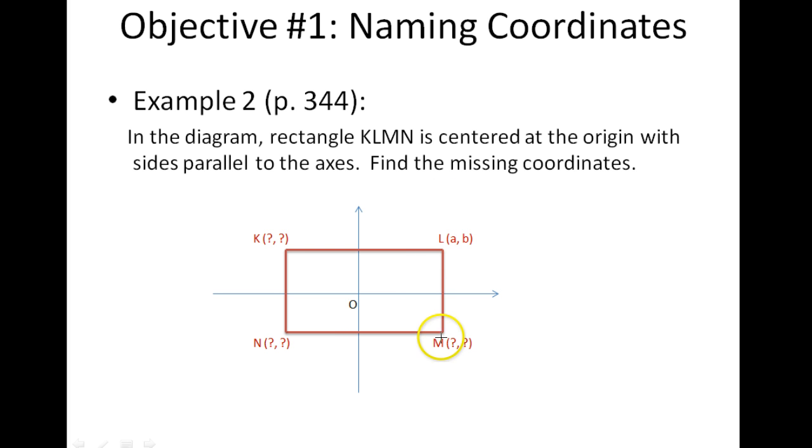When we look at point M, it's going to share the same x-axis that L has because they both fall on the line that crosses the x-axis at the same point. L has x-coordinate A. Therefore, M also has x-coordinate A.